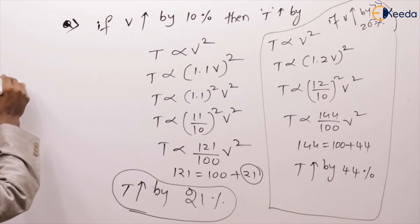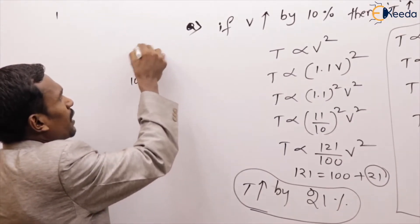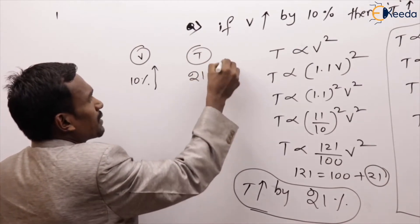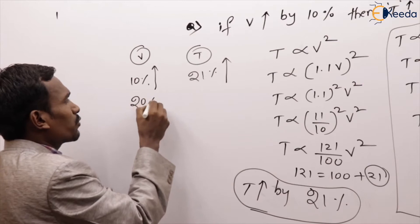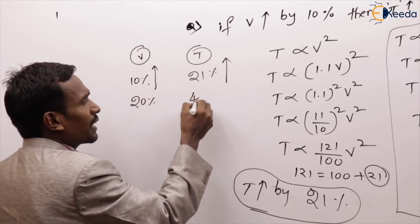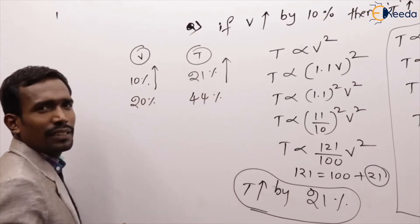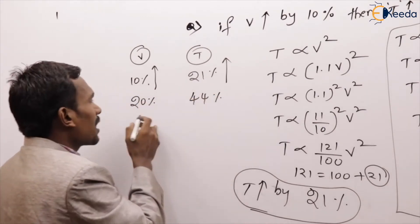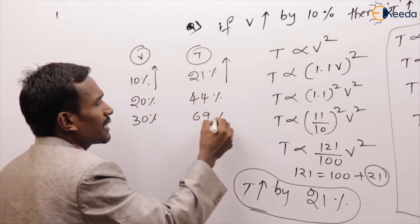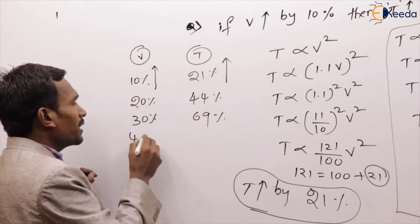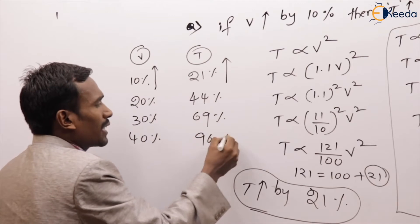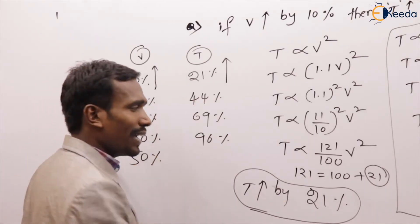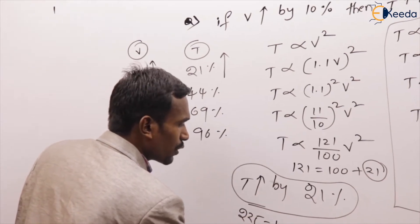See here: if voltage increased by 10%, torque increased by 21%. If voltage increased by 20%, torque increased by 44%. For 30%: 13 squared = 169. For 40%: 14 squared = 196. For 50%: 15 squared = 225, which is 100 plus 125.